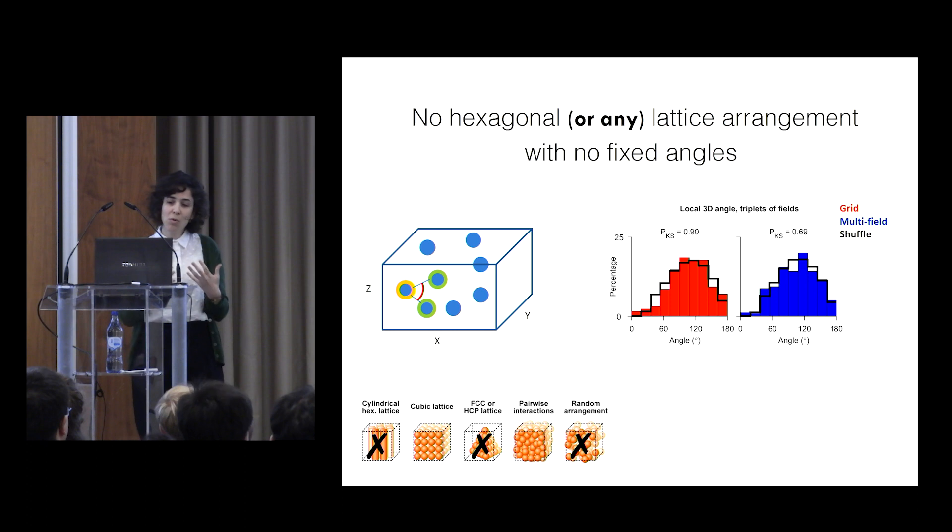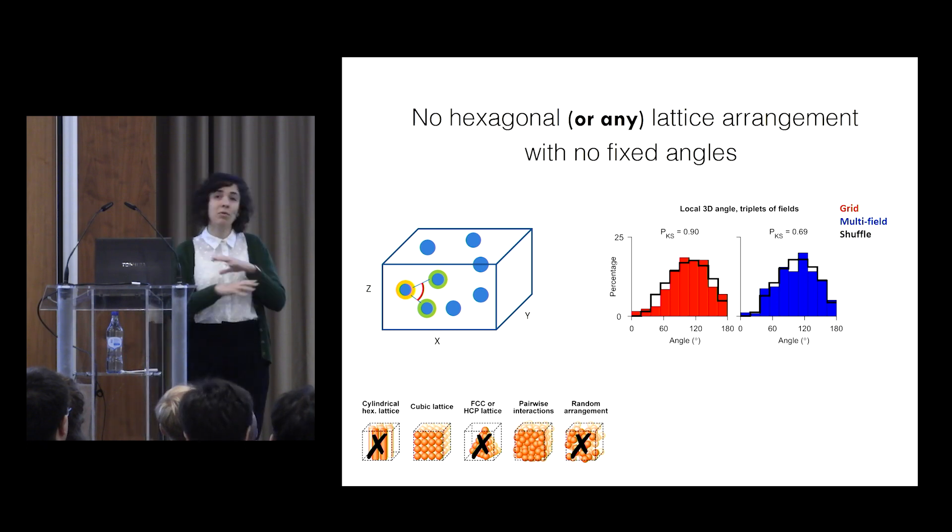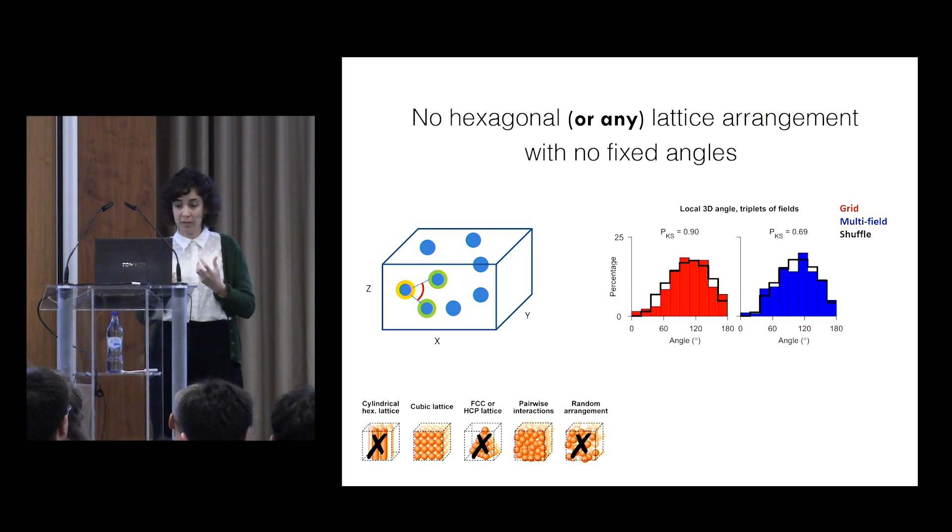the angle distribution looks just like in the shuffle data in the black line. And so we have no hexagonal lattice. We have no any other type of lattice organizations, and we have no fixed angles. And we can now cross out this option of a different type of lattice.